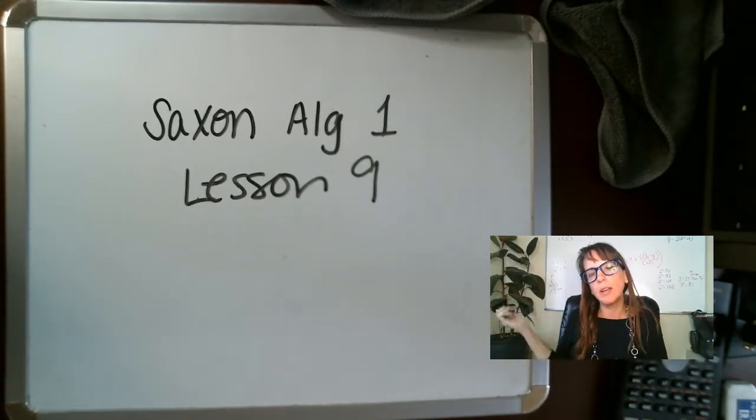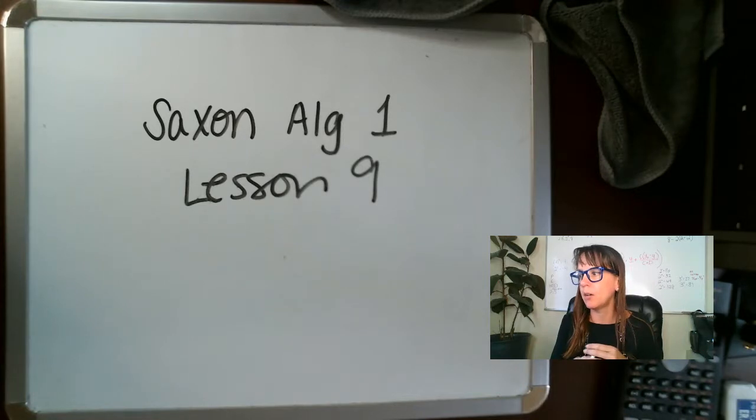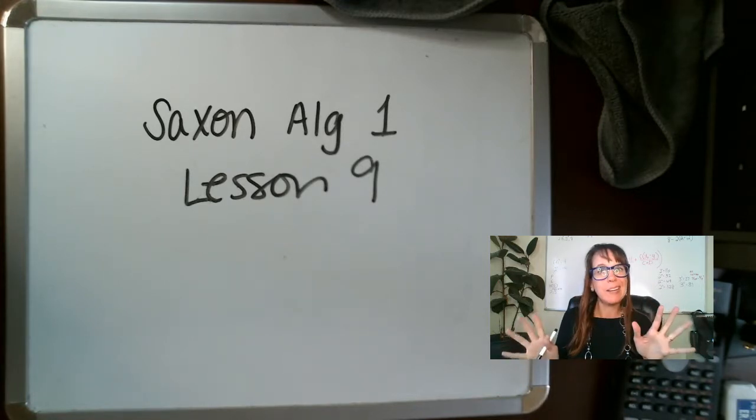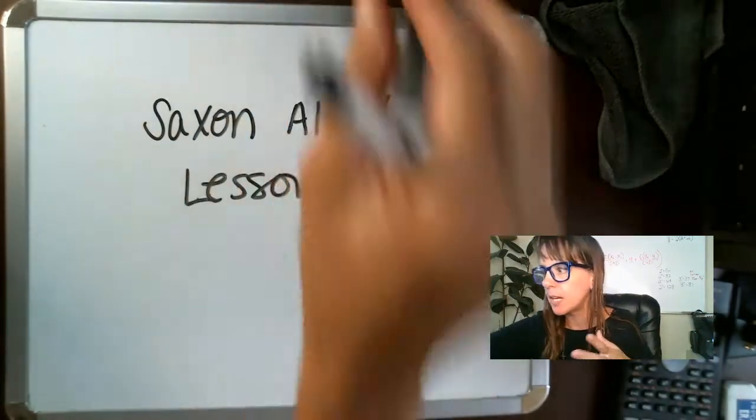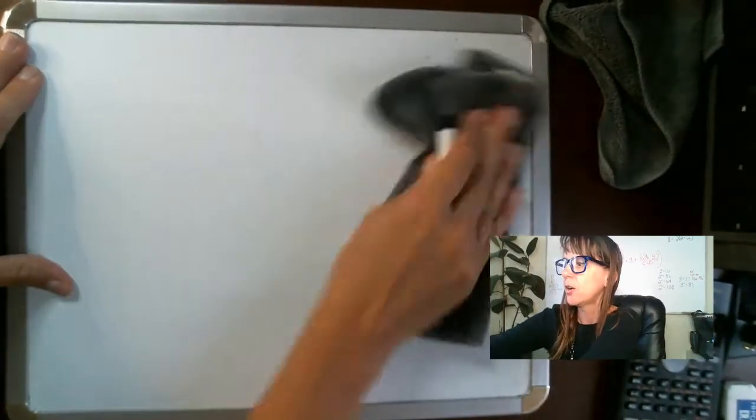So Hank and I here are going to teach you about multiplying and dividing integers—integers being positive and negative numbers, right? So Saxon lesson nine, we are in algebra one for those of you keeping track at home. It's actually the third edition.